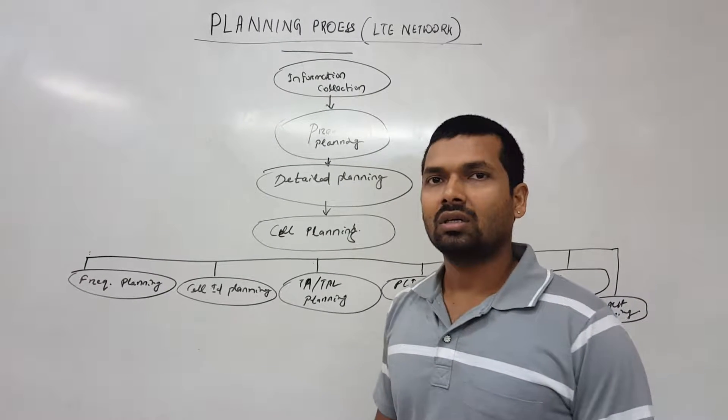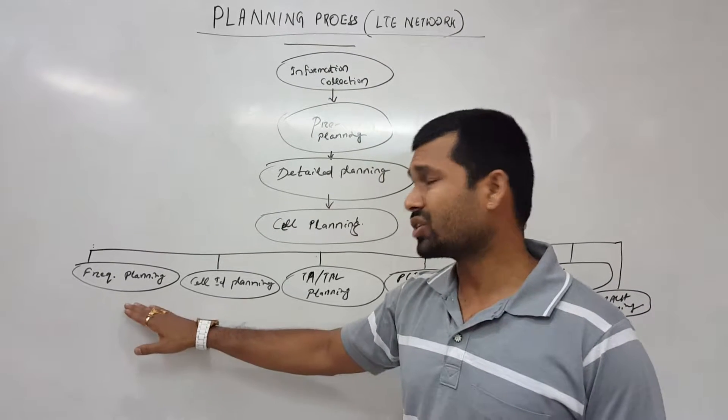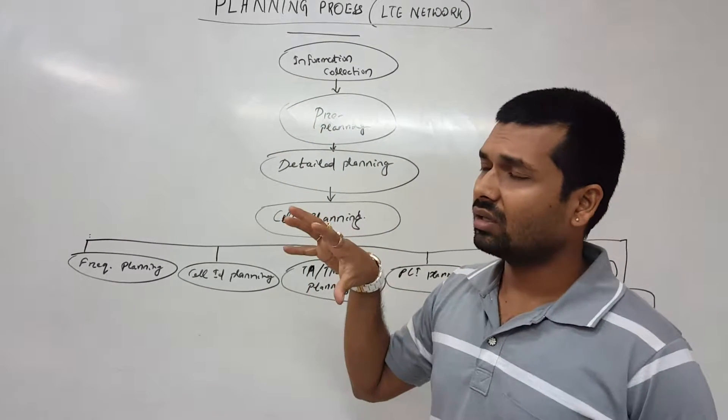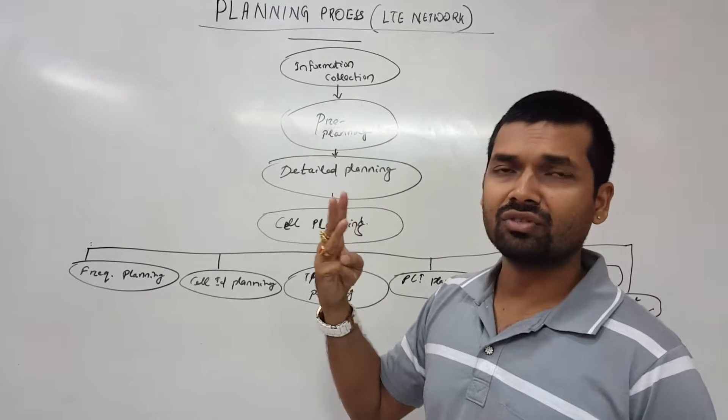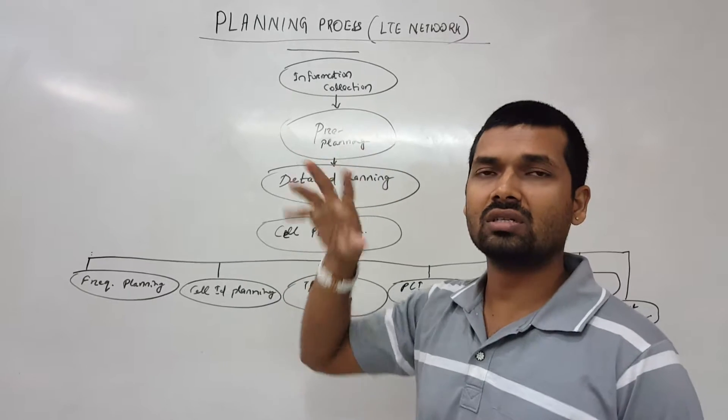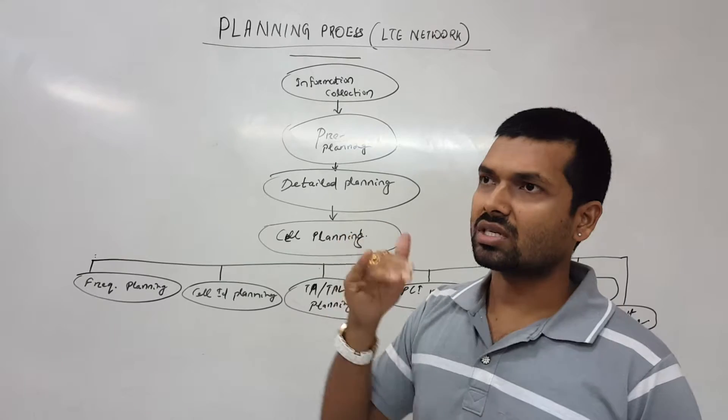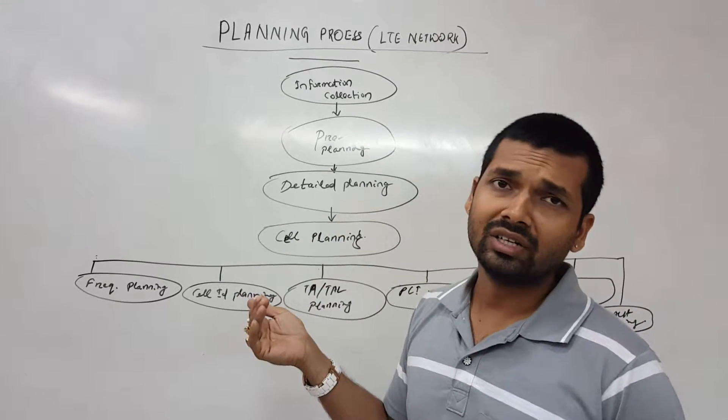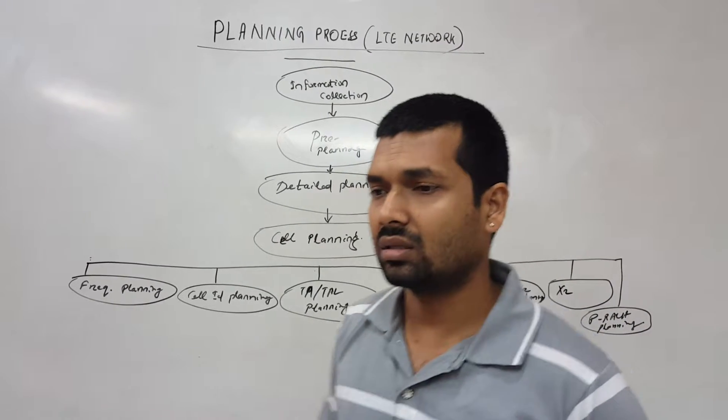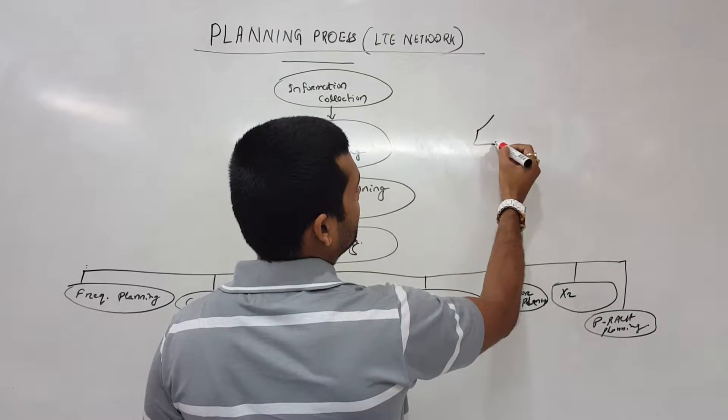Secondly, ICIC, that is a feature: inter-cell interference coordination. In inter-cell interference coordination we do frequency plan. Let's say we are having three different frequencies. We plan the border area or the cell edge with one frequency and inside of cell other frequency, and we use set and reuse distance to combat interference in the cell edge. I will draw a picture for that and make you understand how it happens.